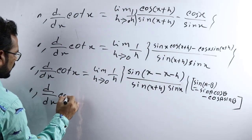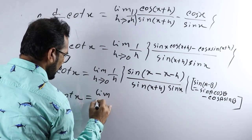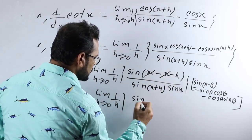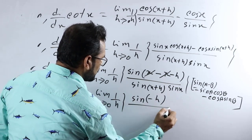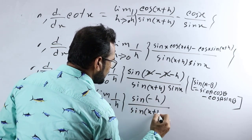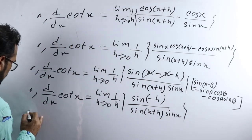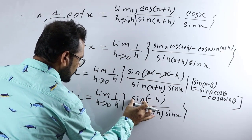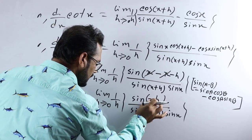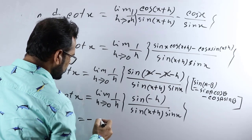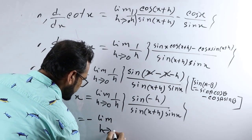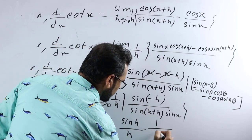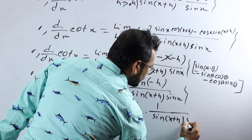So d/dx of cot x equals limit h tends to 0, one divided by h, times sin(minus h) divided by sin(x+h) sin x. Since sin(minus h) equals minus sin h, we can take out the minus sign and rearrange to get sin(h) divided by h, times one over sin(x+h) sin x.